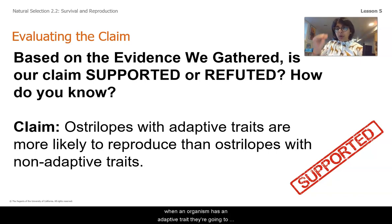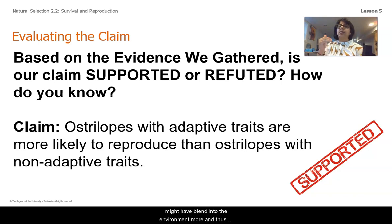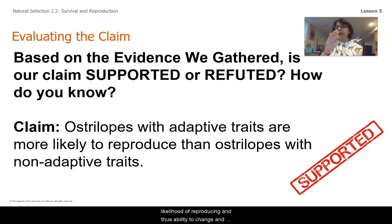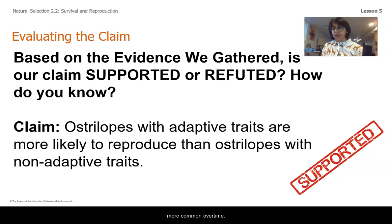When an organism has an adaptive trait, they're going to have more opportunity to reproduce because they might blend into the environment more, and thus they will have a higher likelihood of reproducing — and thus the ability to change and shift the population so that the adaptive trait becomes more common over time.